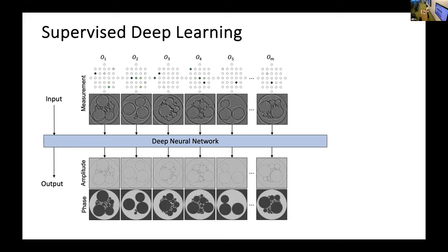However, the problem with this is that to collect the ground truth, you need to, for every low resolution image, also collect the full stack of images to compute what the ground truth output would be. And this is not possible if your specimen is moving or if it's changing, if you want to do live imaging. So you're really limited in terms of scientific discovery, what you can do here.